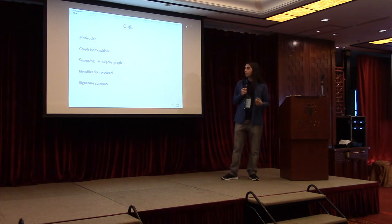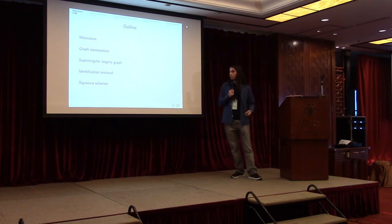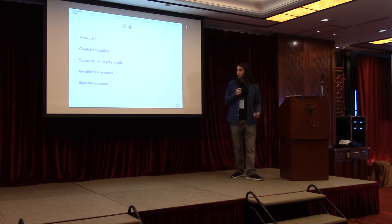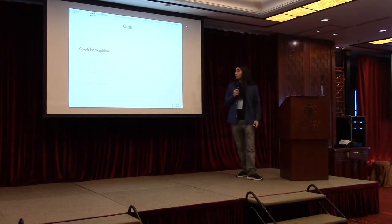The outline of this talk is the following. First, I will recall the graph isomorphism proof. I believe most of you will be familiar with it, but it's worth recalling because it will share a common structure with the proof we are going to build. Then I will talk about the supersingular isogeny graph, which is one of our main tools for building this identification protocol. Then I will explain the construction very briefly and talk about how we can get signatures from that.